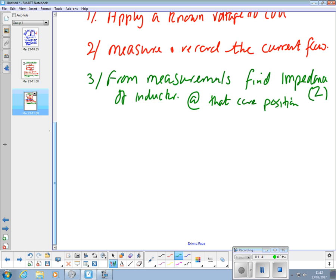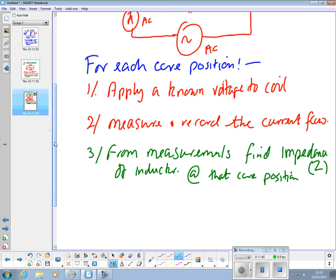Because we know that as we move that core, because we've got a better or worse magnetic circuit from the iron core being inside, the inductance is going to change. From those measurements you'll be able to work out the impedance in all the different core positions.